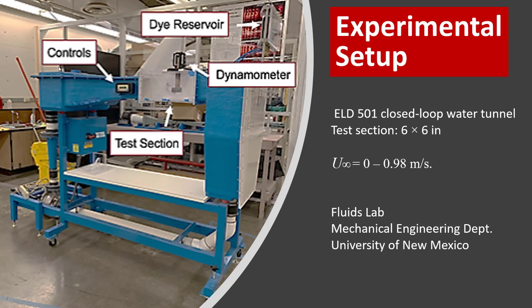Experimental setup used in the study is a water tunnel with test section dimensions 6 by 6 inches and velocity ranges from 0 to 0.98 meters per second. This water tunnel is located at Fluids Lab in the Mechanical Engineering Department of University of New Mexico. This facility was sufficient for us to understand whether the performance of bio-inspired design deserves more attention.